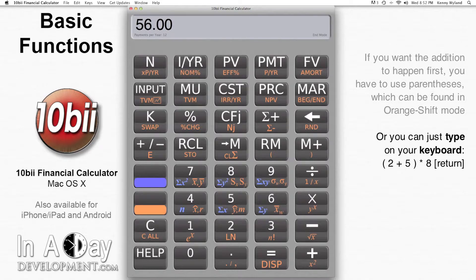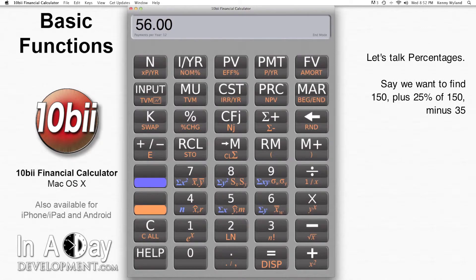This is very easy to do with your keyboard, because you can simply type open paren 2 plus 5, close paren, asterisk 8, then hit enter to get the answer. Now let's talk percentages.